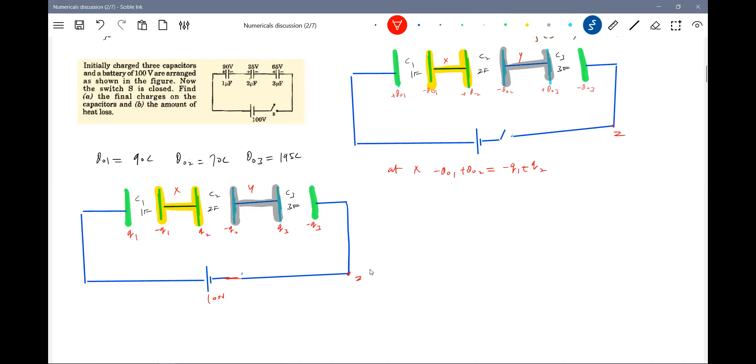Minus Q naught 90 plus 70. So this should be equal to minus Q1 plus Q2. So this should be equal to minus Q1 plus Q2 equal to minus 20. Keep it equation one.